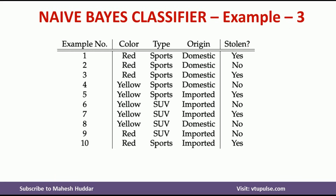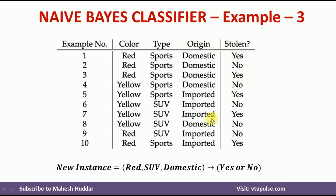In this case, we have been given 10 examples. There are three attributes: color, type, and origin. Stolen is the target variable. Given this particular dataset, we need to classify the new instance — red, SUV, domestic — as either yes or no.